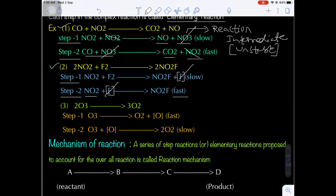Third example: decomposition of ozone, also a complex reaction involving two steps. In step 1, O3 decomposes to give O2 and nascent oxygen atom. In step 2, O3 again combines with the nascent oxygen atom to give O2. Step 1 is fast and step 2 is slow. Adding these two reactions gives the overall reaction: 2O3 → 3O2.